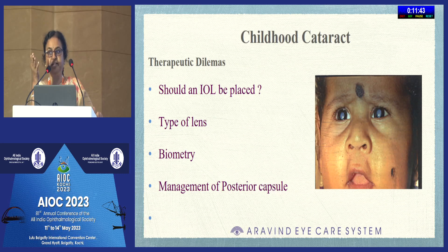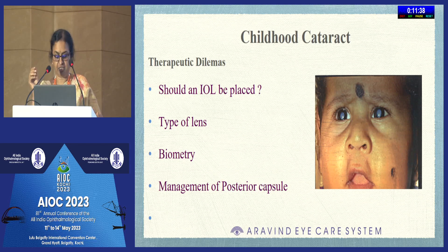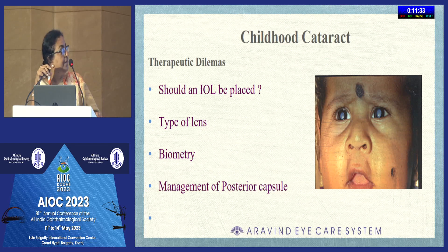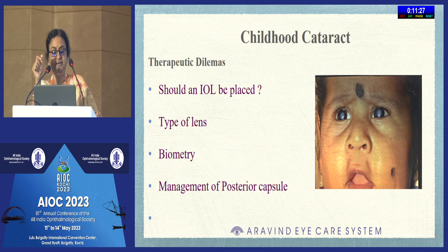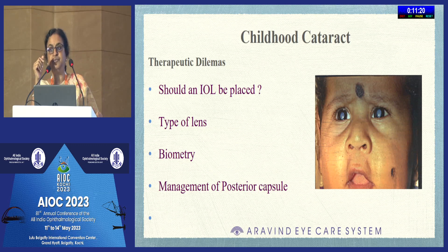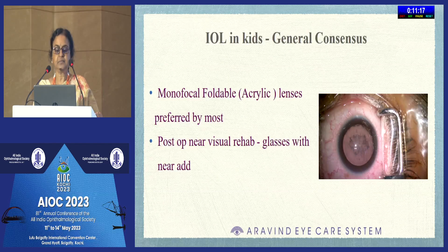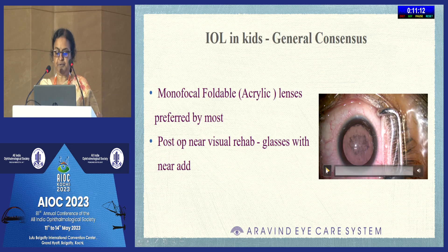Visual development is a challenge in children, and there are additional therapeutic dilemmas: whether an IOL should be placed at a younger age, what type of lens to use, biometry challenges, the lack of specific IOL power calculation formulae for children, no customized IOL for the pediatric population, and how to manage the posterior capsule. The general consensus is to prefer a monofocal foldable acrylic lens, which has given good results.